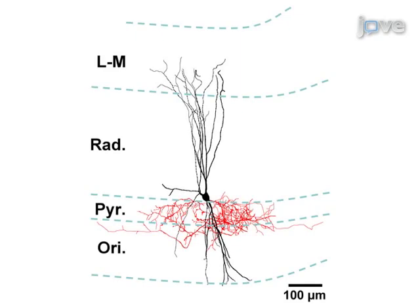A three-dimensional reconstruction of the same interneuron is shown here with the soma and dendrites in black and the axon in red. The layers of the CA1 are delineated in blue.